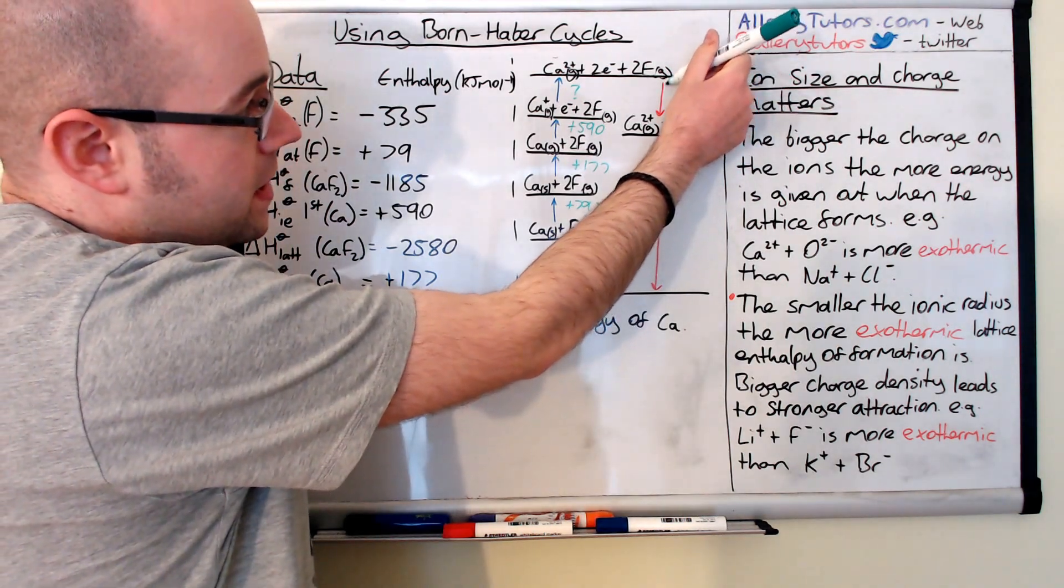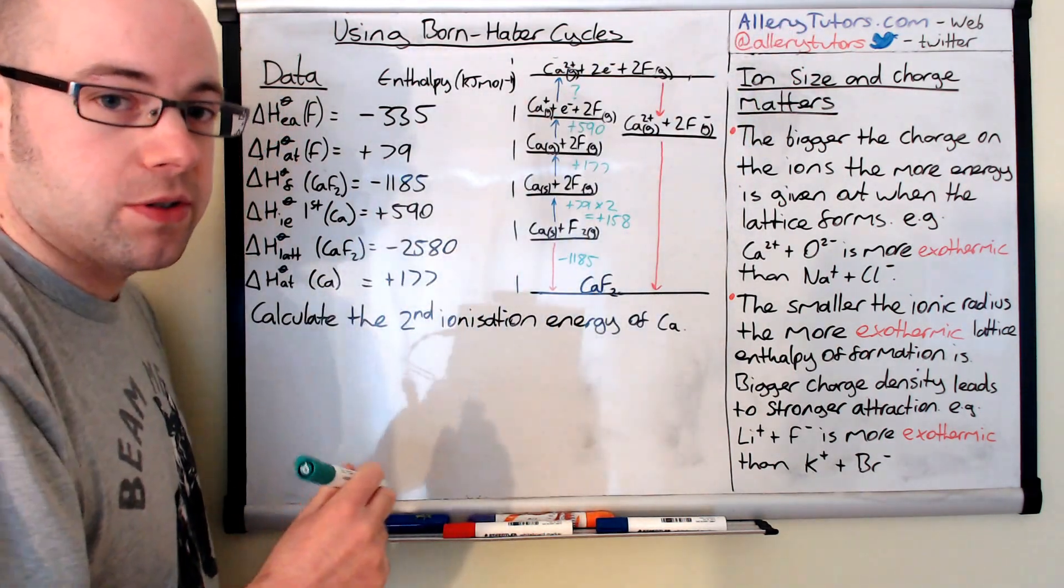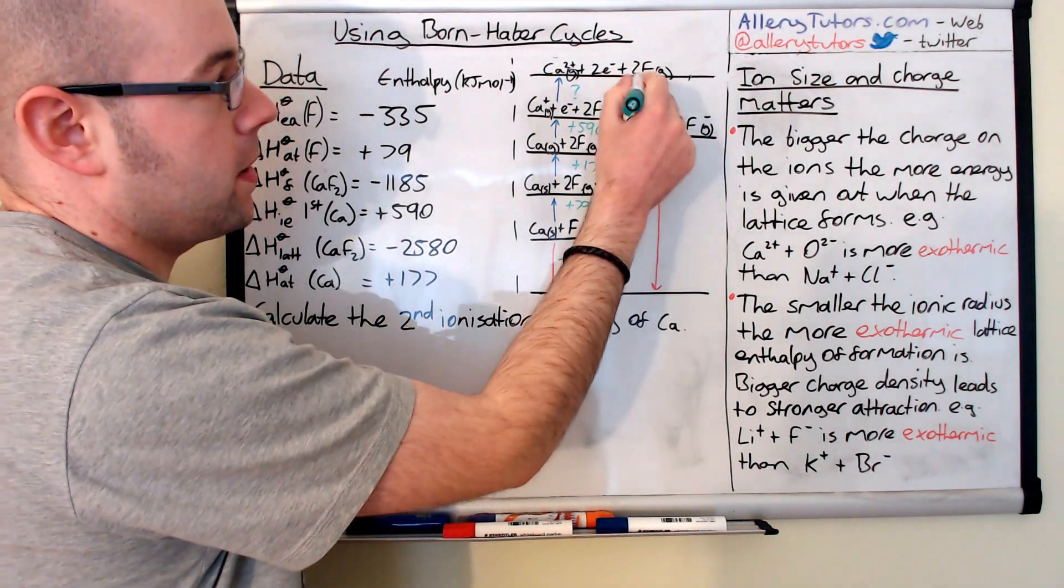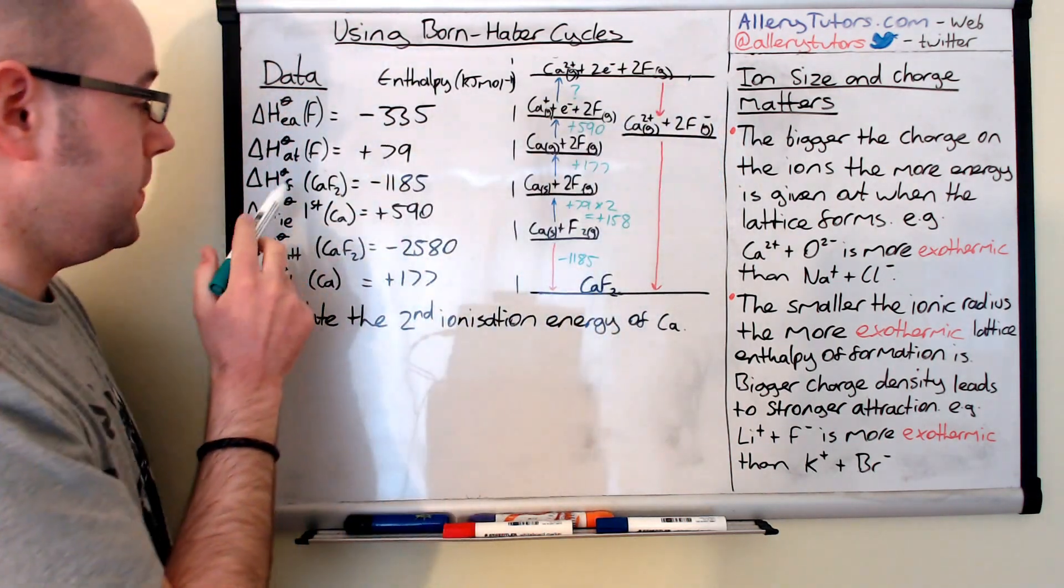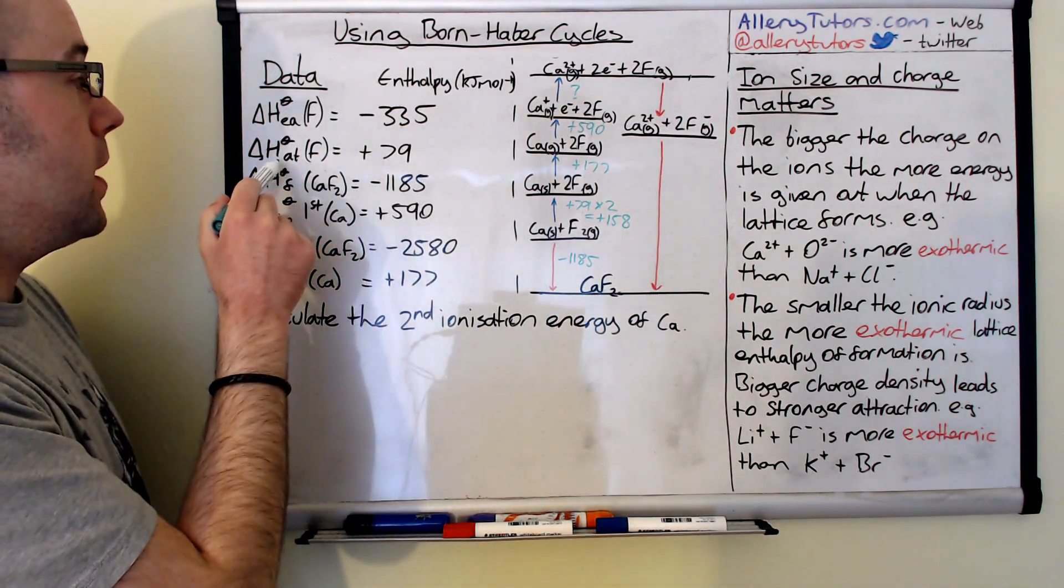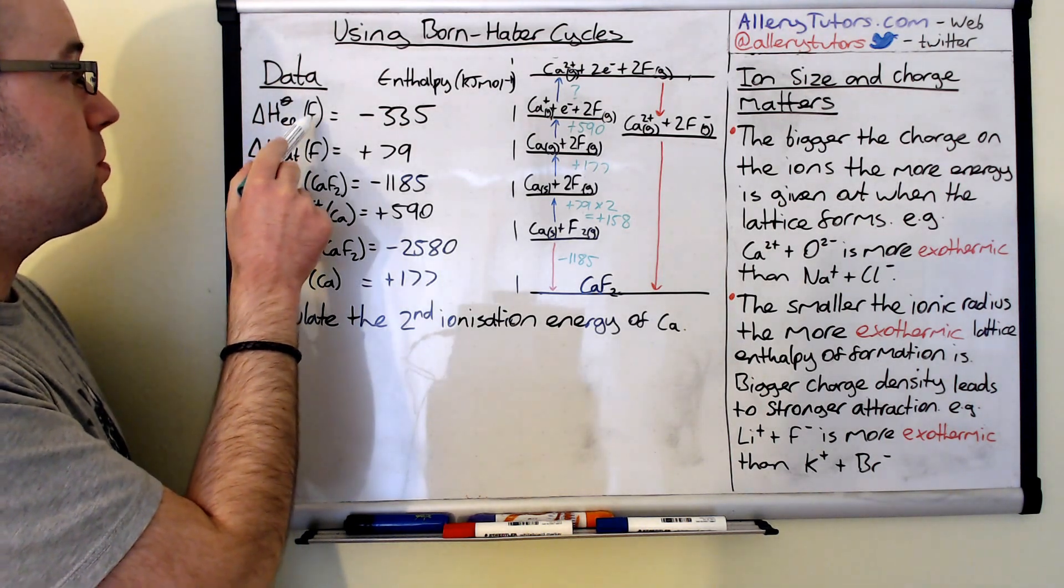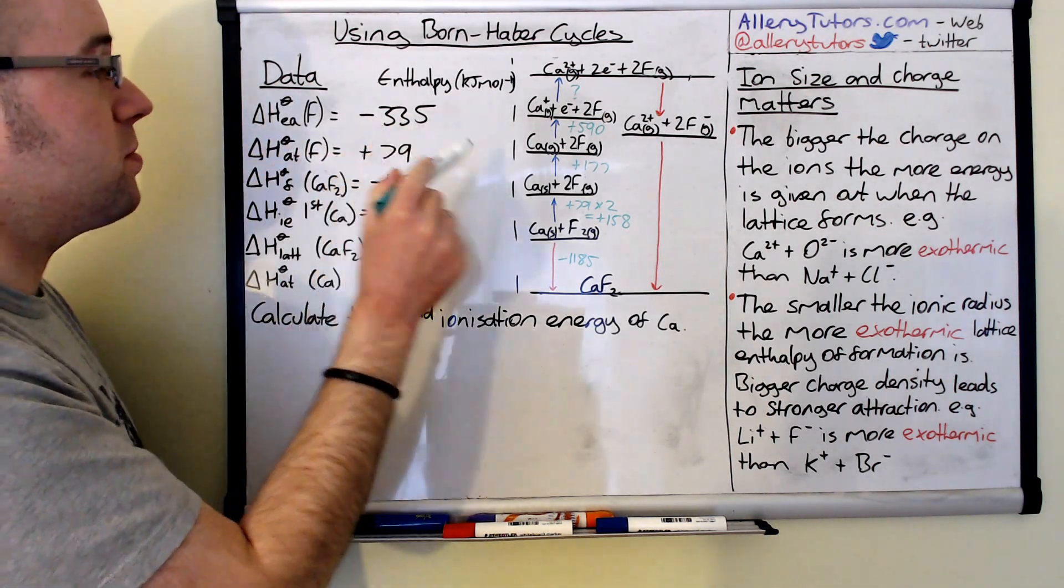This one, now this is the electron affinity, the first electron affinity onto our fluoride, onto our fluorine atom. Because we've got two of them so we need to look at our electron affinity which is this one here of fluorine minus 335.